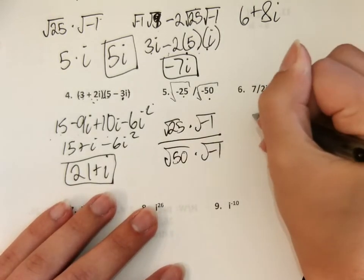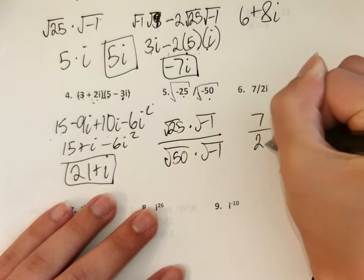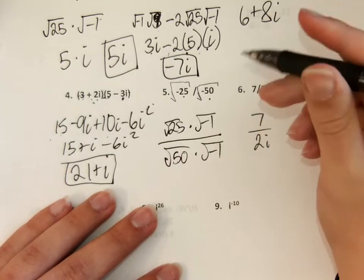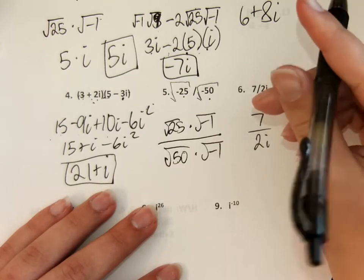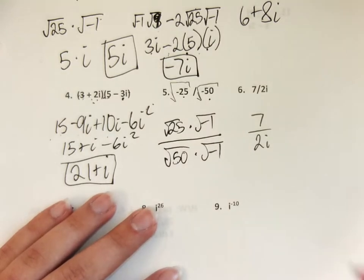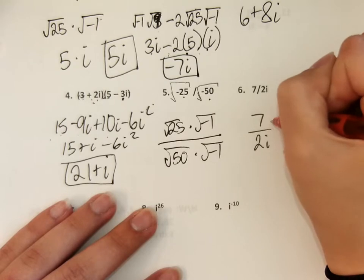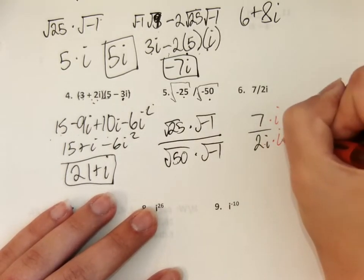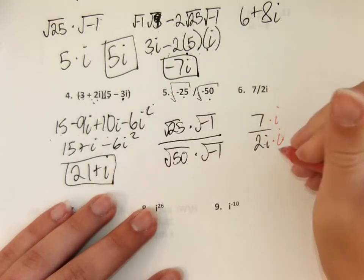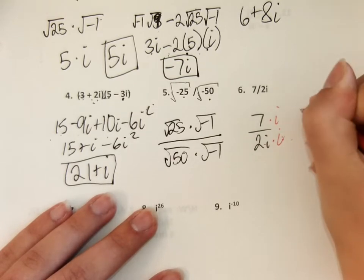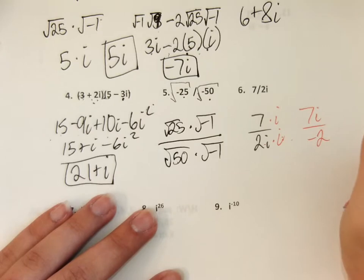Now we have seven over two i. You can't have an i in the denominator — it's the same rule as a square root. So to get rid of the i on the bottom, you multiply by i over i. i times i is negative one. Two times negative one is negative two. So you have seven i over negative two, since i squared equals negative one.